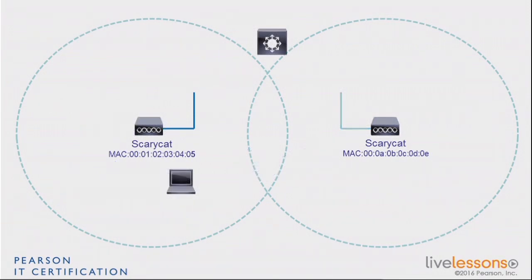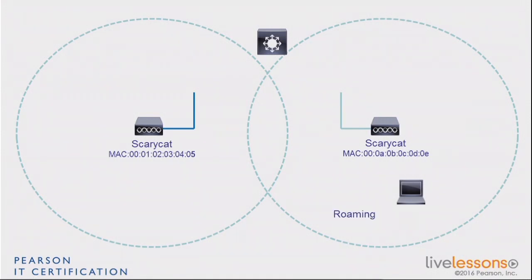You have two access points serving the same SSID. If you have a laptop or any mobile device, you will need to move around the floor, moving from one access point to the other. There needs to be communication from those access points to the network, and they will likely need to communicate with each other. The action of moving from one access point to the other without interruption — without dropping your communication — is called roaming. Roaming has to be seamless, meaning the infrastructure must ensure the flow of traffic to and from that laptop is not interrupted.